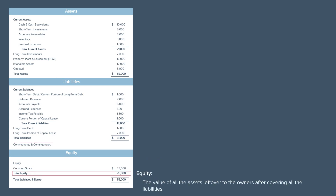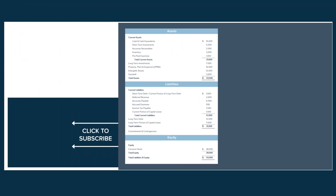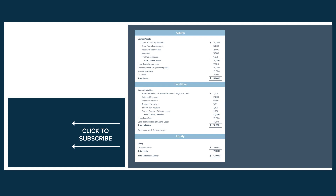And finally, we have equity. This is the value of all the assets left over to the owners after covering all the liabilities. The most important line in this section is shareholders' equity. And that's it — that's the balance sheet! If you have any questions, drop a comment below and remember to subscribe!